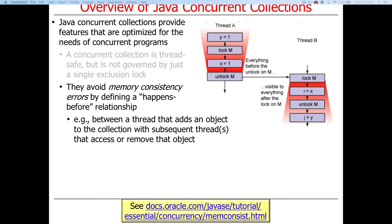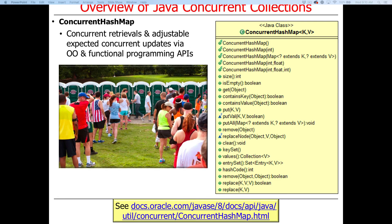Concurrent collections use happens-before relationships, which are often implemented under the hood using compare-and-swap operations. These are super optimized to avoid blocking as much as possible. As a result, they ensure things show up in the right order, memory visibility is preserved, race conditions don't occur, atomicity is preserved, and ordering of instructions is handled properly.